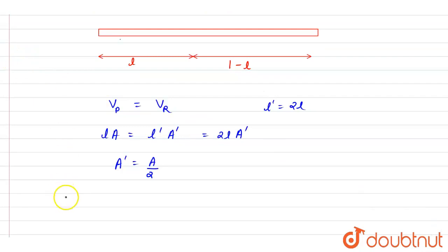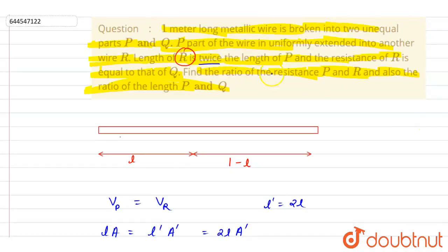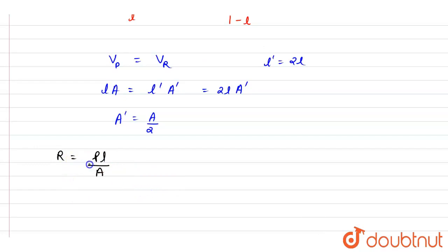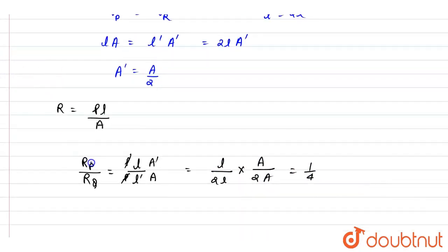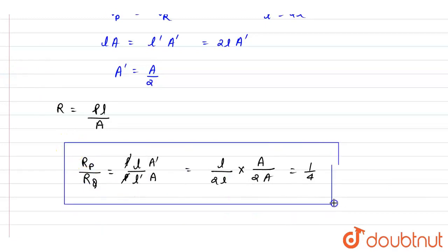Now, resistance is given by R = ρl/A. For the first part, we want the ratio of resistance of P to R. This is directly related to length and inversely to area. So resistance of P over resistance of R equals (l / l') × (A' / A). Substituting l' = 2l and A' = A/2, we get (l / 2l) × (A/2 / A) = (1/2) × (1/2) = 1/4.